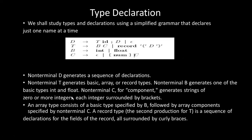Now, how do we declare types? We shall study types and declarations using a simplified grammar that declares just one name at a time. The left part is the non-terminal part and the right part consists of terminal plus non-terminal combinations. The non-terminal D generates a sequence of declarations and is our starting symbol. Non-terminal T generates basic, array, or record types.